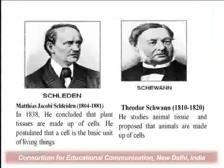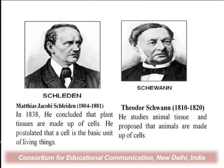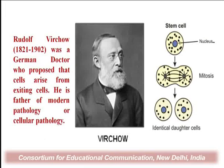Later on, after the studies of Robert Hooke and Leeuwenhoek, another biologist, Matthias Jacob Schleiden, concluded that plant tissues are made up of cells. A similar observation was obtained by Schwann, who studied animal tissue and proposed that animals are also made up of cells. Further study by Rudolf Virchow postulated that one cell originates from another cell — through cell division.